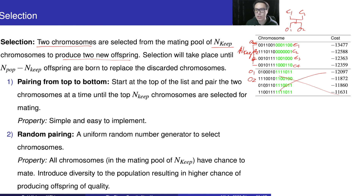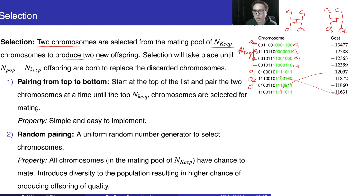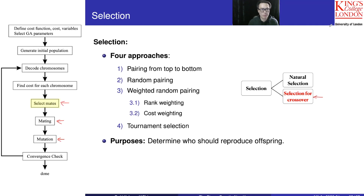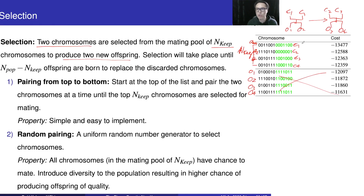In total we need to have four offspring, so this first pair just produced two. We are then going to pick another two chromosomes — say C2 and C3 — and we are going to have offspring three and offspring four. In the middle, how do we produce these offspring? It involves crossover, mating, as well as mutation. I will introduce that later, but now I focus on these four approaches for picking chromosomes as parents.